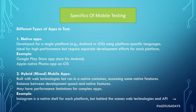First of all, you need to understand that there are different types of apps you can test on mobile devices. There are native apps, developed for a single platform — for example, Android-specific or iOS-specific. They use platform-specific languages, are ideal for high performance, but require separate development efforts for each platform. Examples include the Google Play Store app for Android and the Apple native photo app for iOS.